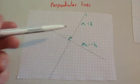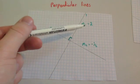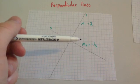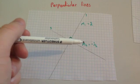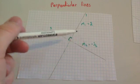So these two lines are perpendicular, and the gradient for the first one is two, and the gradient for the second one is equal to minus a half.